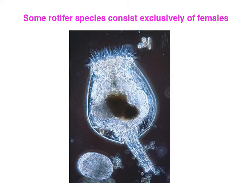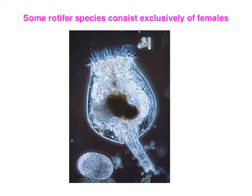These cycles have fascinating consequences. Some species only exhibit amixis, so you never see males produced — certain rotifer species consist exclusively of females with entirely asexual reproduction. Additionally, resting eggs can remain dormant for more than just a season. Eggs collected from lake or pond sediments have been found to date back 50 or even 100 years. Bringing those into a lab and hatching them allows researchers to compare what rotifer populations looked like a century ago to populations today.